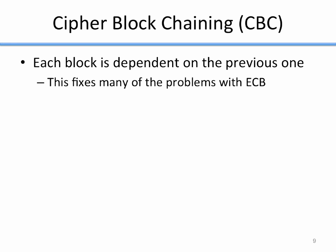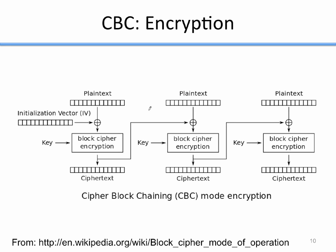An improvement on ECB is called Cipher Block Chaining, or CBC. In CBC, each block is dependent on the previous one — adding that one simple change fixes many of the problems ECB had. In the encryption diagram, plaintext is XORed with the ciphertext from the previous block, and that result is fed into the encryption algorithm to produce the ciphertext. That ciphertext is also fed into the next encryption, so every ciphertext is dependent on the plaintext of its block and the previous ciphertext.